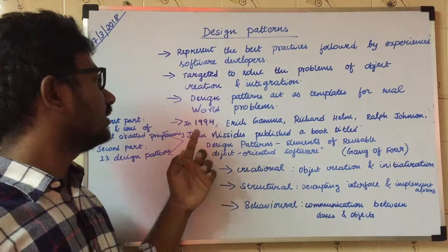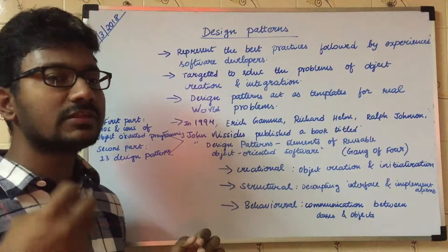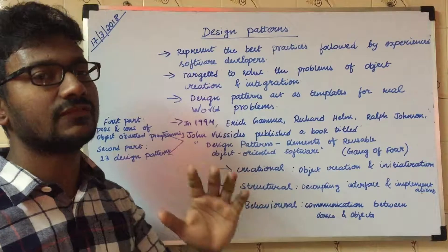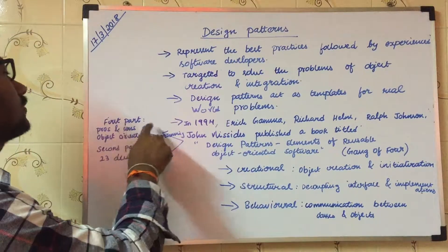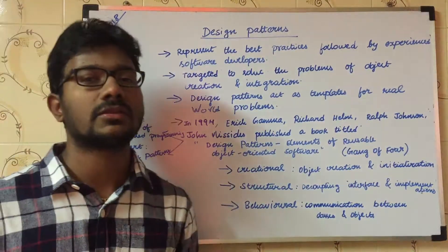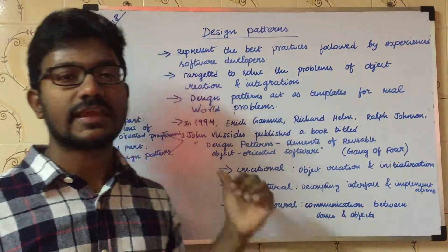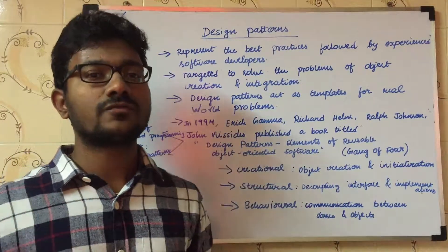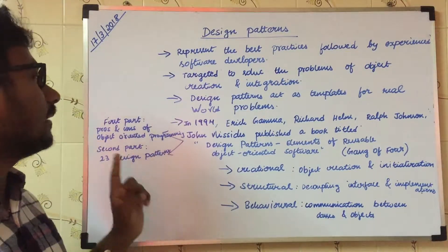Design patterns were discovered by four people — Erich, Richard, Ralph, and John — and they published the book called 'Design Patterns: Elements of Reusable Object-Oriented Software' in 1994. The book covers two things: the first part covers the pros and cons of object-oriented programming, and the second part covers 23 design patterns. While the first part was covered by many books, the second part is the unique contribution that makes these four people stand out.